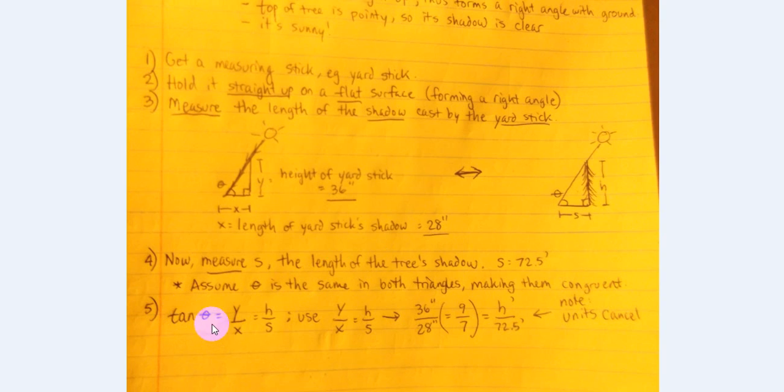And we know from basic trig that the tangent of this angle theta here in this triangle and in this triangle, the tangent of theta is equal to the side opposite the angle, which would in this case be y over x, which is the adjacent side. It's adjacent because it's touching the angle. So the tangent of theta is equal to y over x. And since these triangles are congruent, that's also the tangent of theta is also equal to h over s. So you don't even have to worry about this. You can just set these two terms equal. Extract that and use y over x equals h over s.